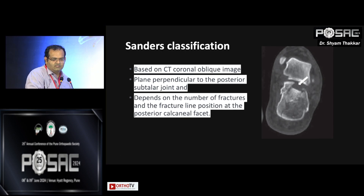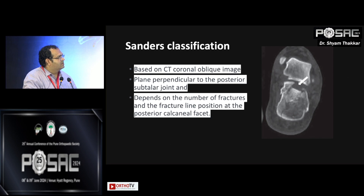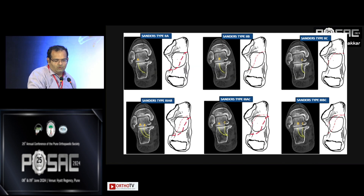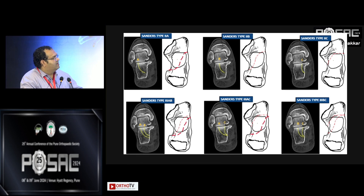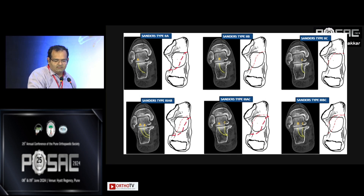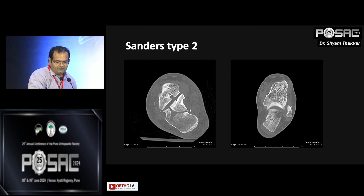The most common classification we use is Sanders classification, based on coronal CT images. It depends on the number of fractures and fracture line position. Type 1 is undisplaced and does not need surgical treatment. Type 2 has subtypes 2A, 2B, and 2C — the fracture line goes from lateral to medial. Type A is the most lateral, B is the middle facet, and C is the medial part of the posterior facet. Type 3 has two fracture lines, and Type 4 has multiple fractures, which is difficult to treat with the sinus tarsi approach.